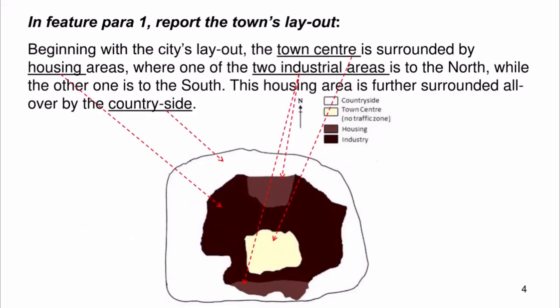In feature para 1, report the town's layout. Beginning with the city's layout, the town center is surrounded by housing areas, where one of the two industrial areas is to the north while the other one is to the south. This housing area is further surrounded all over by the countryside.